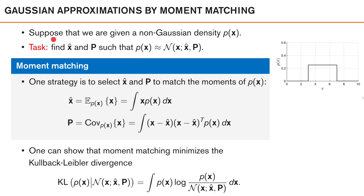Suppose we are given a non-Gaussian density p of x. p of x could, for instance, look something like this if x is scalar. Our task is to find x-hat and P such that p of x is approximately Gaussian with mean x-hat and covariance P. One strategy is to select x-hat and P to match the moments of p of x. We call this strategy the moment matching principle.